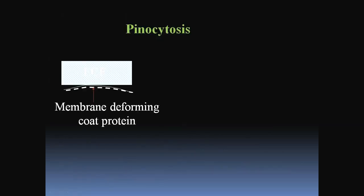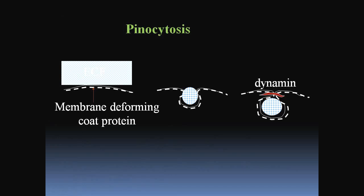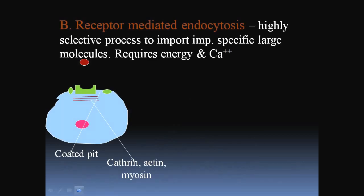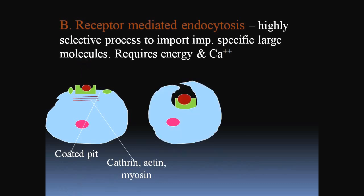A schematic diagram shows pinocytosis activity. Secondly, receptor-mediated endocytosis is a highly selective process to import important specific large molecules. It requires energy and calcium. A schematic presentation illustrates this receptor-mediated endocytosis process.